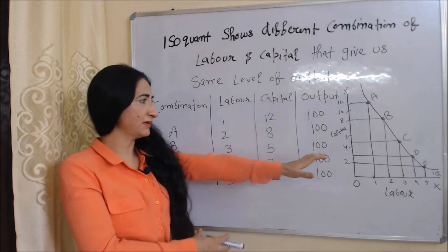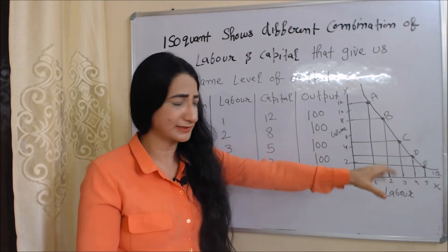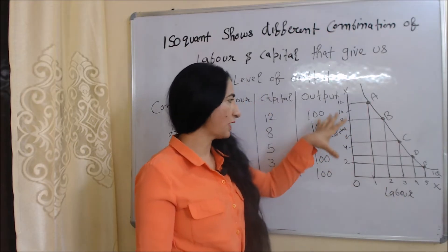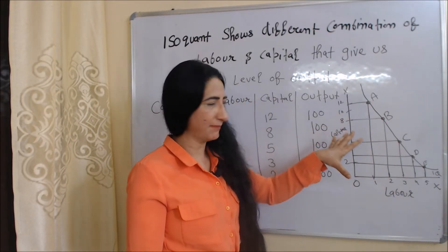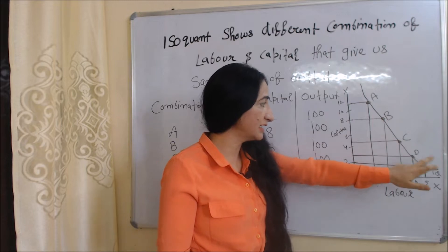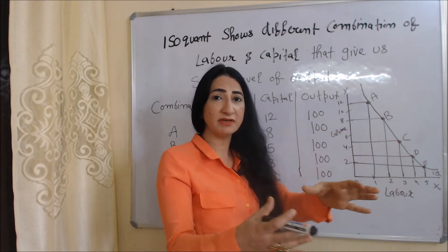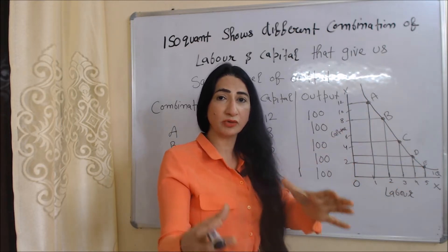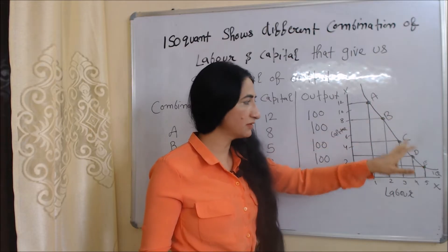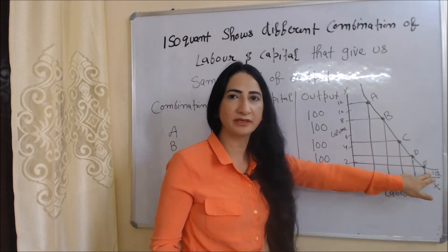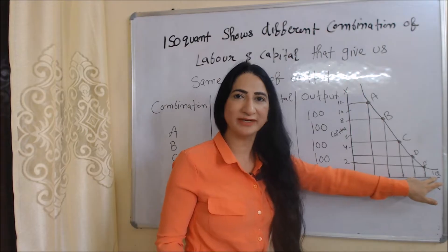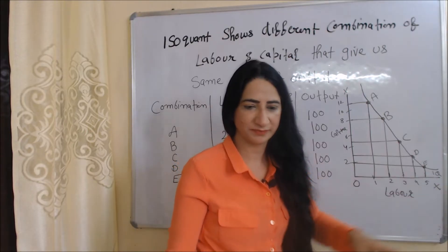When we convert this table into a diagram, on the x-axis we have labor and on the y-axis we have capital. All combinations A, B, C, D, E are giving the same amount of output. When we join all these combinations, we get our isoquant curve, represented as IQ.